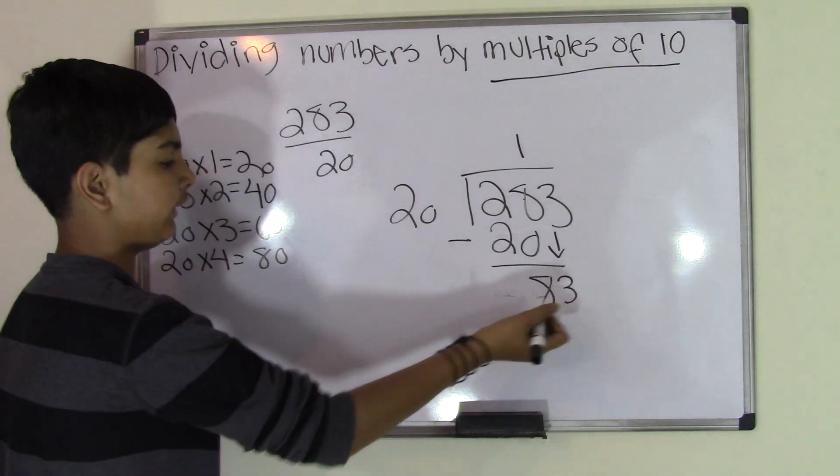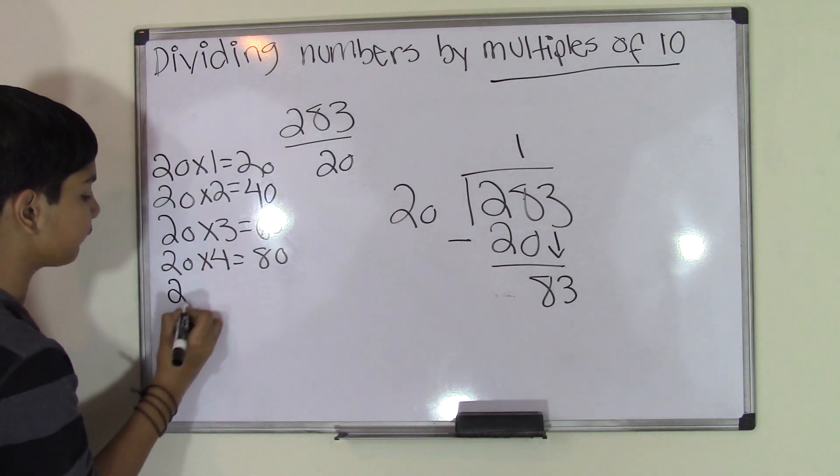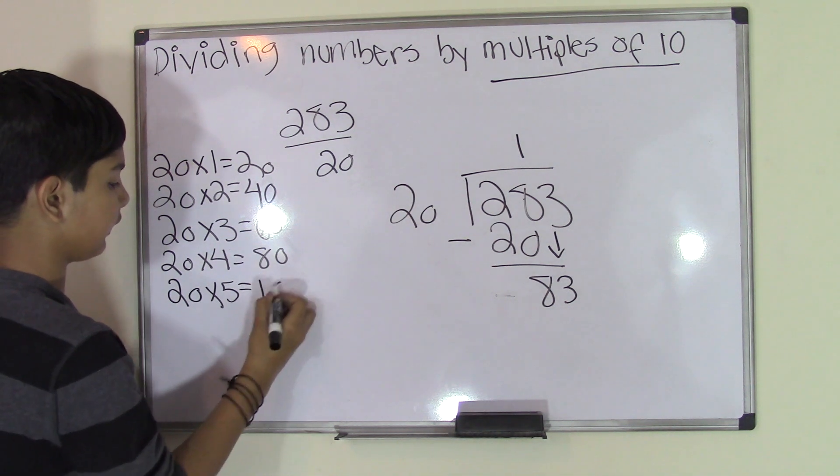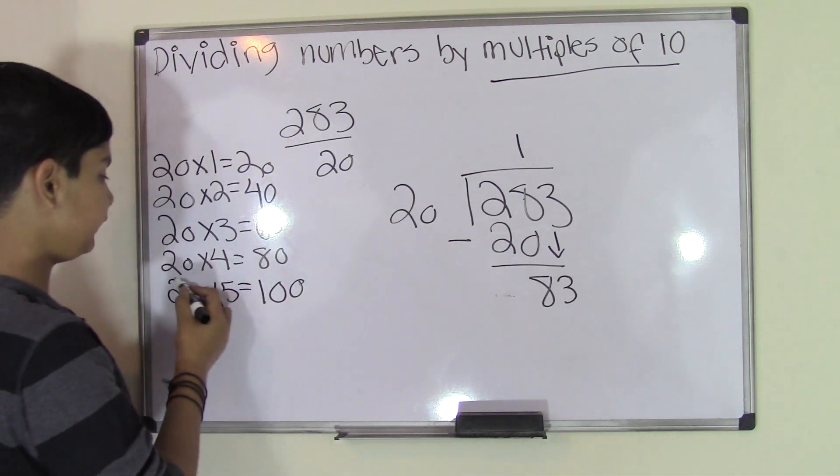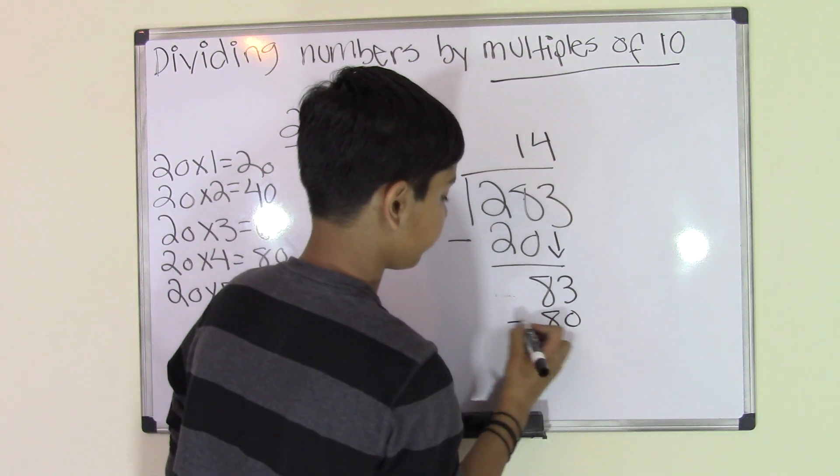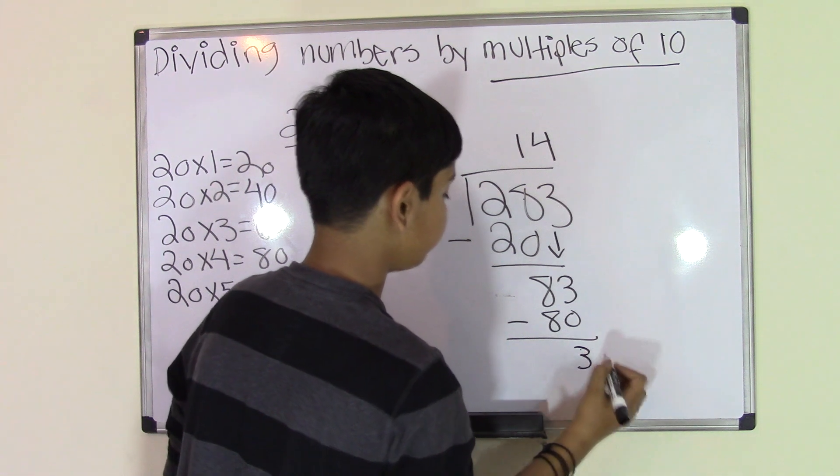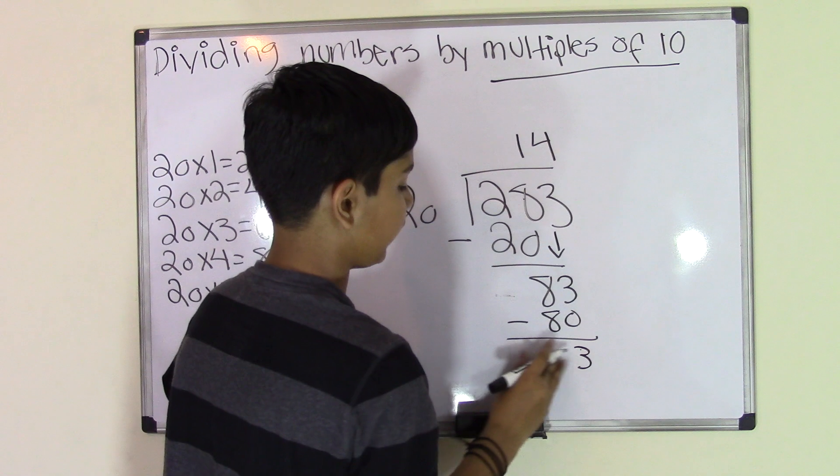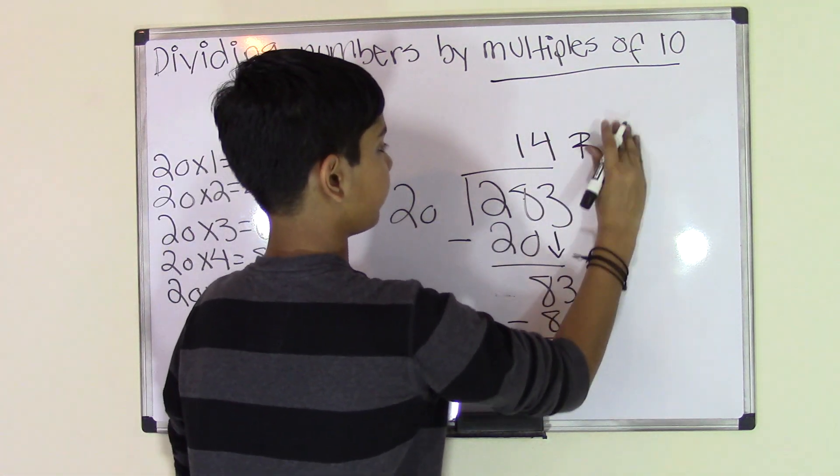Let's keep going to see if we can get a closer answer. 20 times 5 is 100. Well, 100 is greater than 83, so we'll have to go with 20 times 4. 20 times 4 is 80. Now we subtract. 3 minus 0 is 3, 8 minus 8 is 0. Now we get a product of 14 and a remainder of 3.